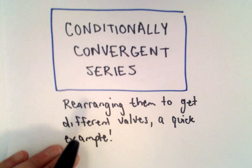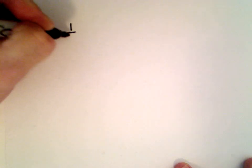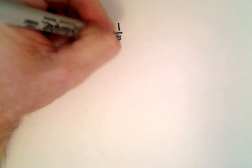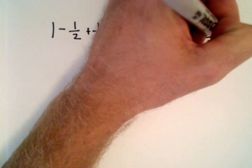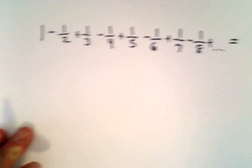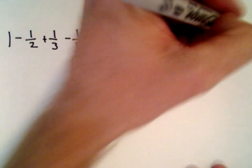Here I just want to look at a quick example to hopefully convince you that it can in fact be done. I'm going to look at the alternating harmonic series, which is one minus a half plus a third minus a fourth plus a fifth minus a sixth plus a seventh minus an eighth plus dot dot dot. You can actually prove that equals the natural logarithm of two.